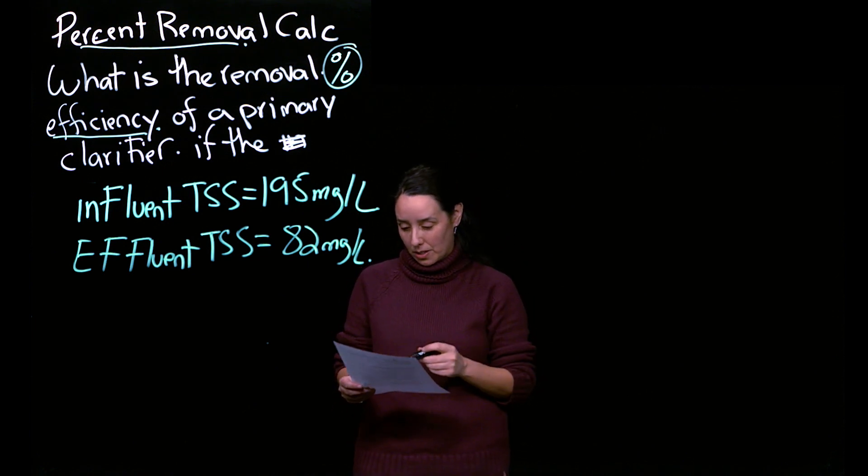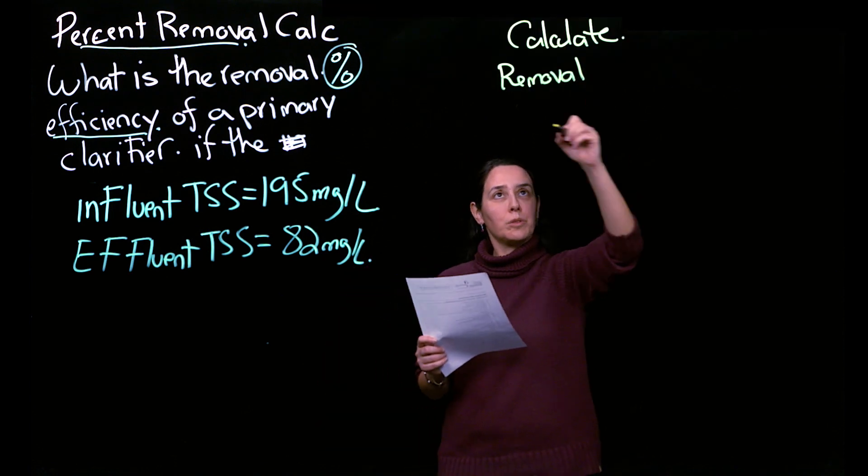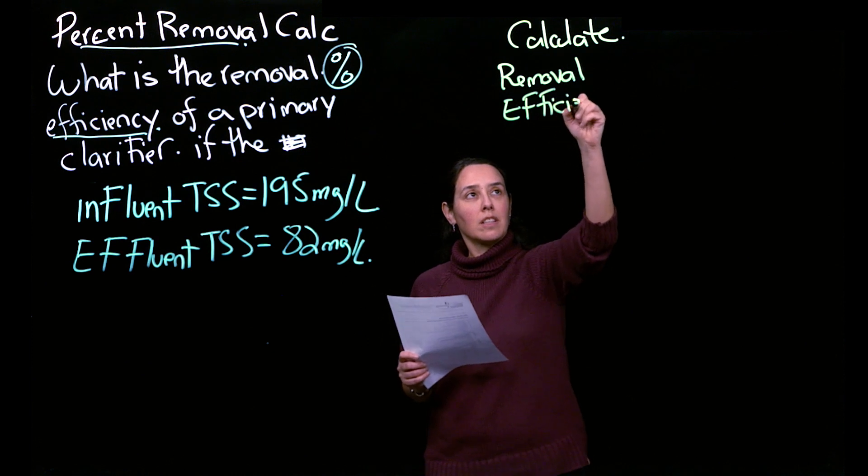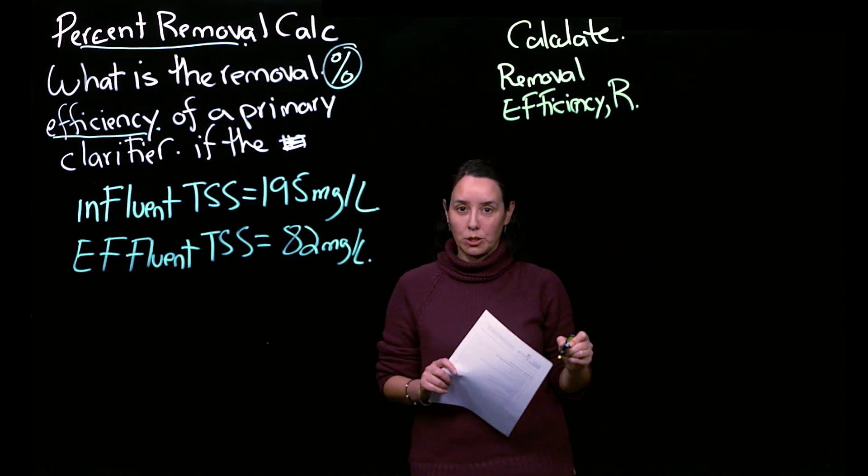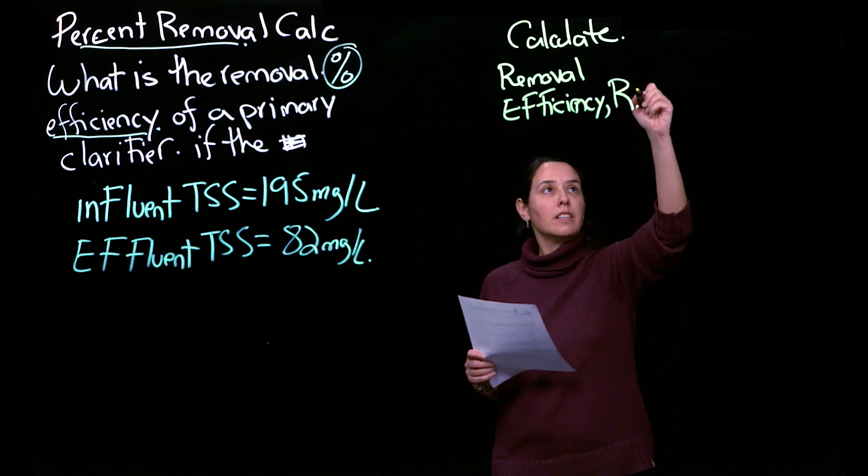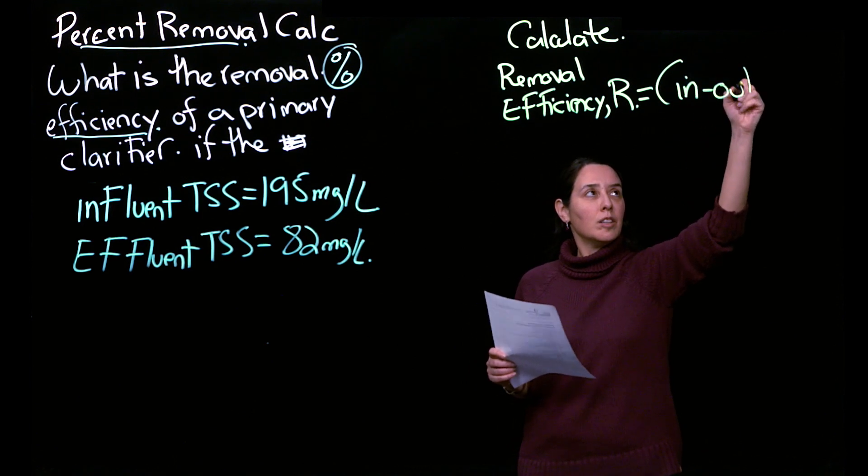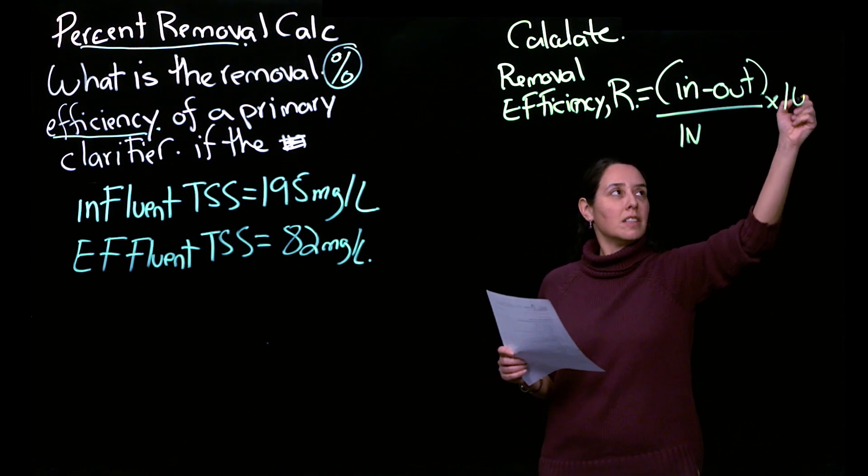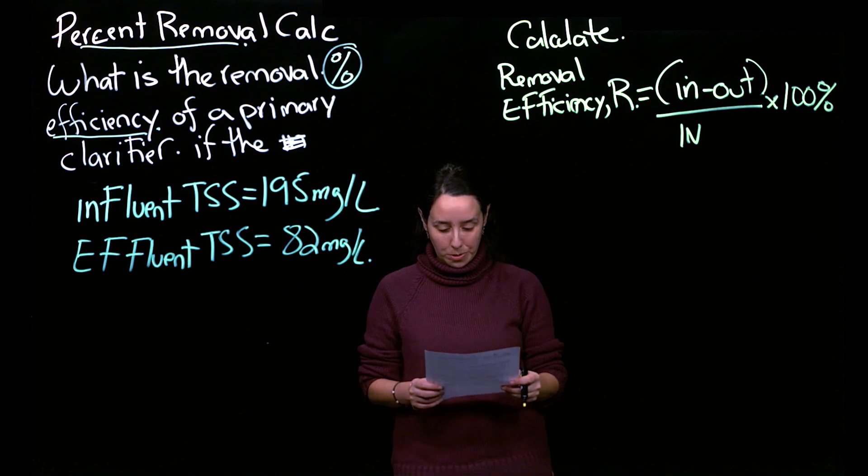So let's look at the formula for that. To calculate the removal efficiency, which is usually represented by R—R like removal—it's just in minus out, divided by in, times 100 percent.